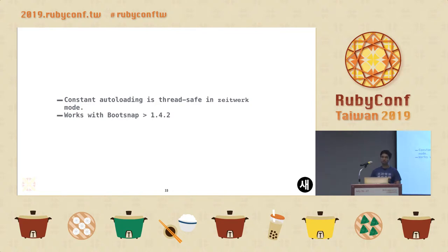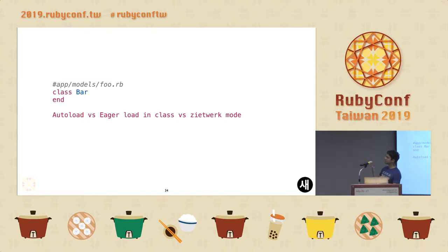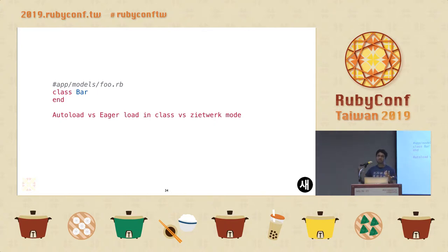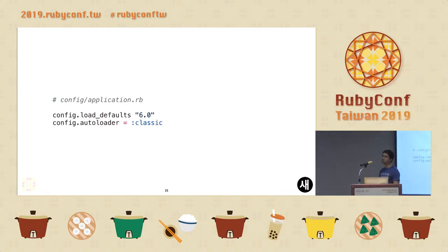The biggest usefulness here is that constant auto-loading is now thread-safe. This is pretty useful in applications to avoid thread-safety bugs that would sometimes happen in production. Out of the box, Zeitwerk works with Bootsnap, which is for faster pre-loading of your applications. A subtle change is that if you previously had a foo.rb file and defined class Bar in it, auto-loading would not work in development. But in production it would eager-load and just work. So there was a mismatch in behavior between development and production. This mismatch has been rectified by Zeitwerk — it will fail consistently in both environments. You can start using it by setting config.autoloader to either classic or Zeitwerk.